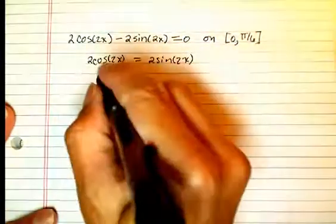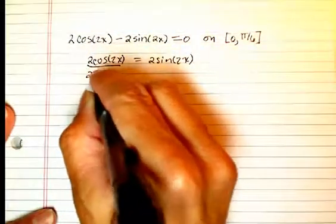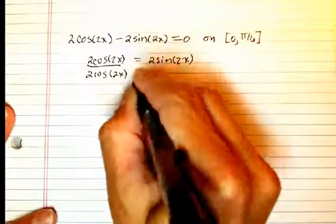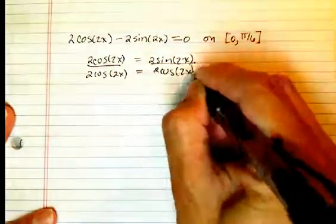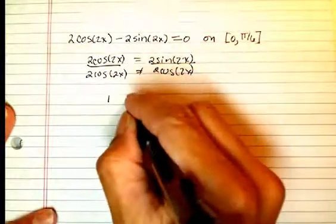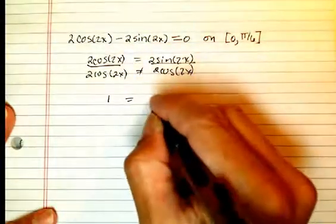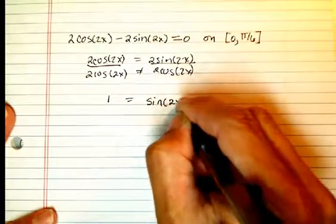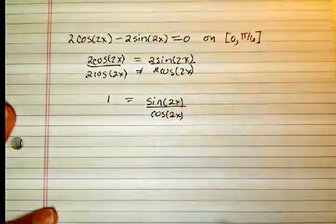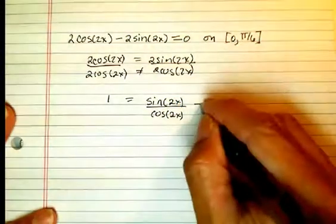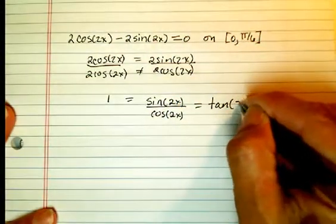I'm going to divide both sides now by 2 cosine of 2x. I guess I didn't need that extra equal. This becomes a 1 on the left, and over here on the right, I have sine of 2x over cosine of 2x equals 1. We certainly recognize that equals the tangent of 2x.